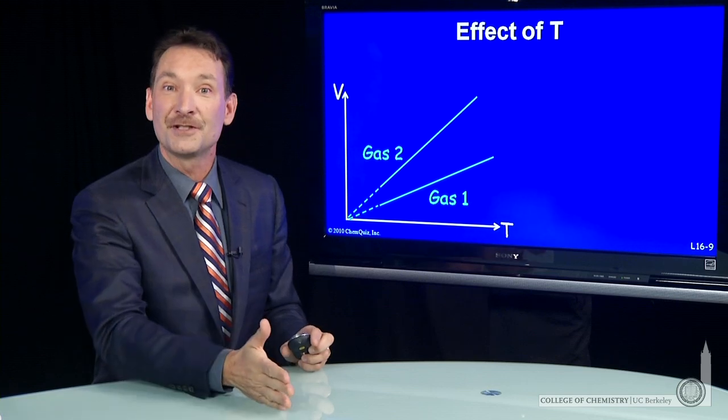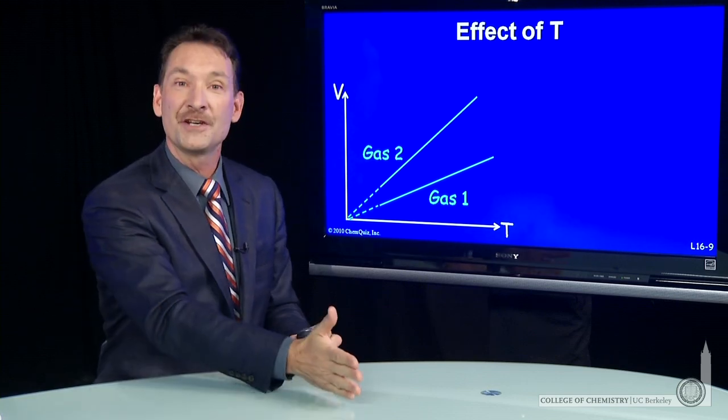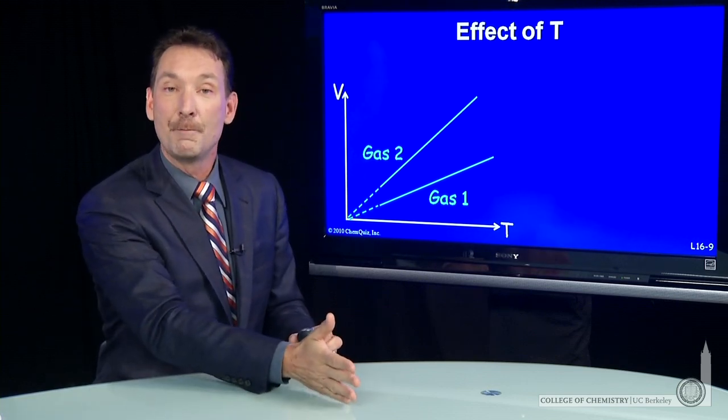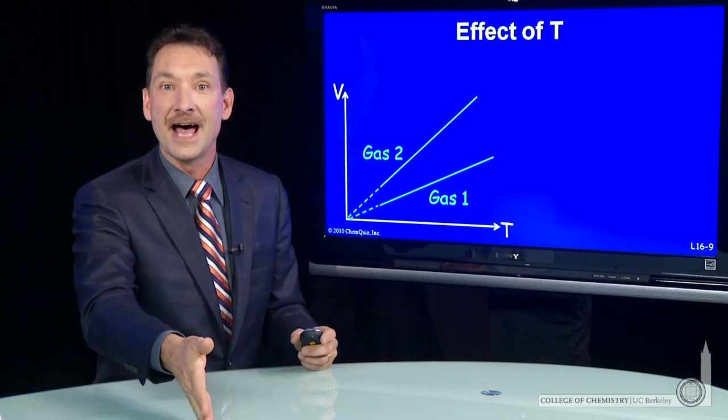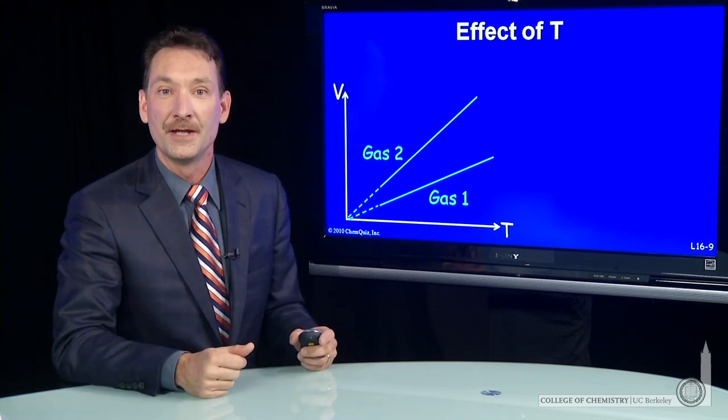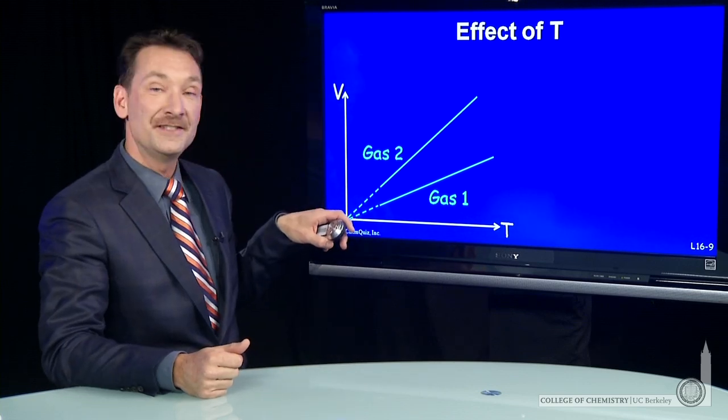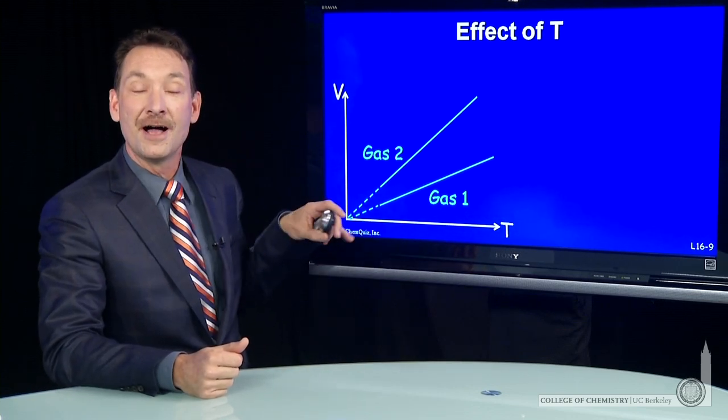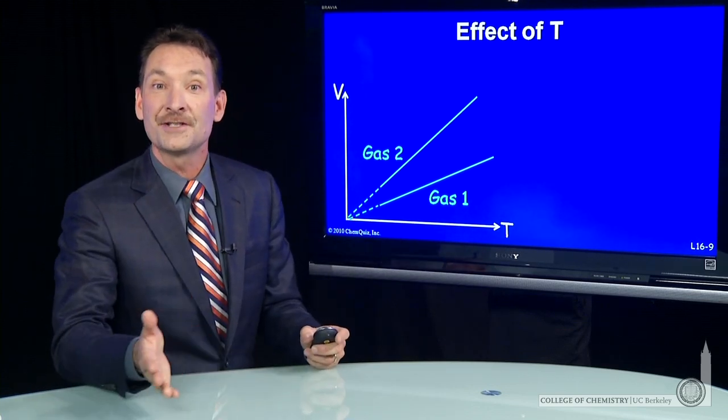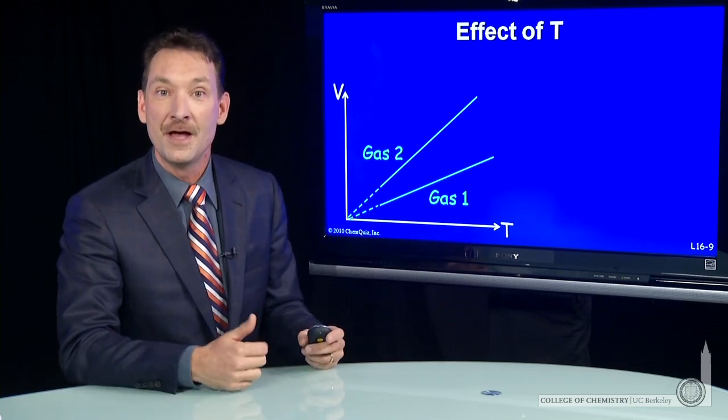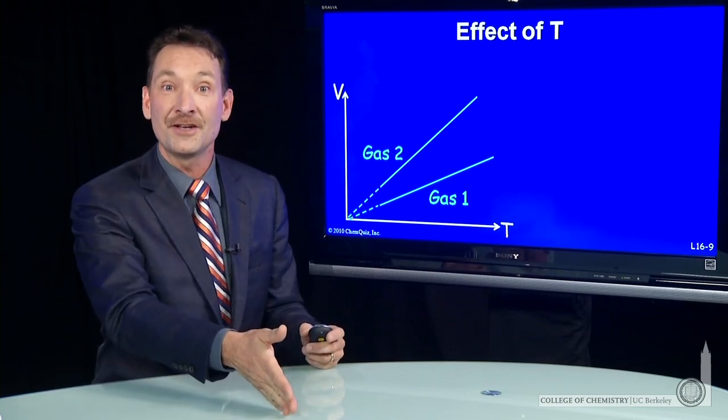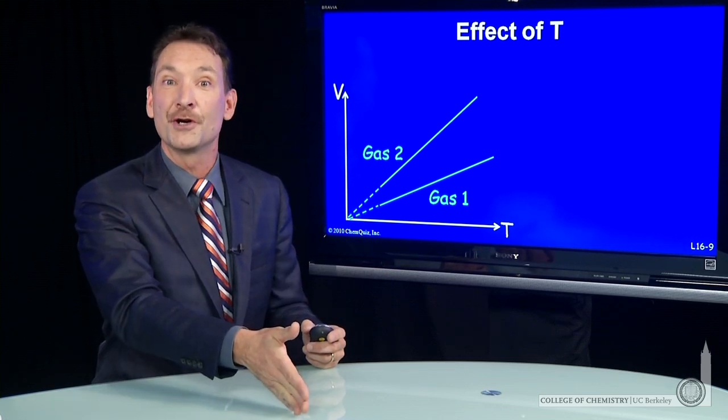And we call that absolute zero, because we can't measure a temperature on this scale below that temperature. The Celsius temperature scale has a zero set at the freezing point of water. And I can measure this zero on this temperature scale on the Celsius scale. It turns out to be minus 273 Celsius. So minus 273 Celsius is an absolute zero in temperature.